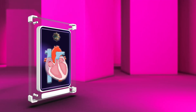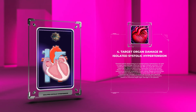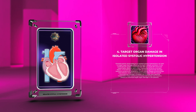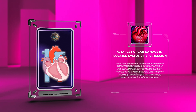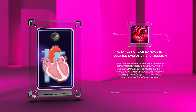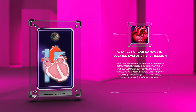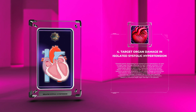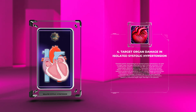Elevated systolic blood pressure in isolated systolic hypertension can lead to target organ damage, affecting the heart, kidneys, and brain. In the cardiovascular system, sustained high SBP can cause left ventricular hypertrophy, diastolic dysfunction, myocardial ischemia, and heart failure. In the kidneys, increased SBP can induce glomerular damage, leading to proteinuria, progressive chronic kidney disease, and end-stage renal disease. Cerebral complications associated with ISH include microvascular changes, increased risk of stroke, and cognitive impairment. Close monitoring and early intervention are crucial to prevent or minimize target organ damage in ISH patients.